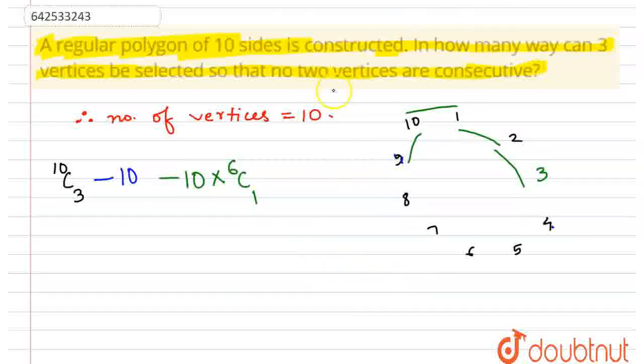For making sense, after this, this turns out to be 10 factorial over 3 factorial 7 factorial, minus 10, minus 10 times 6.